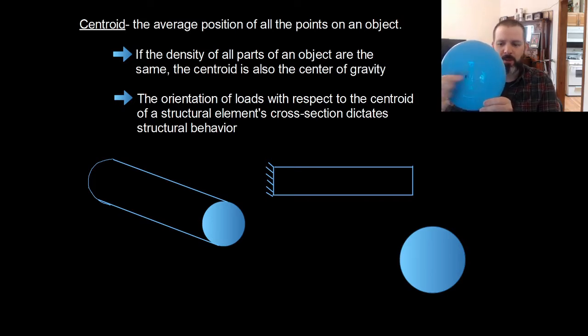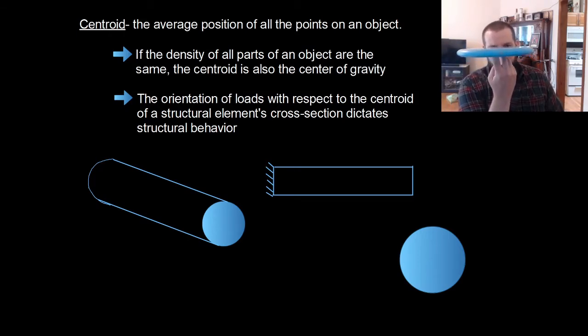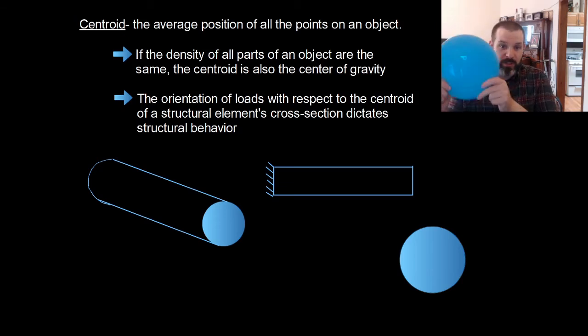Let's take for example my son's frisbee golf putter. It's made from one material, it's circular, and that puts the centroid dead in the middle. If I take this disc and put my finger in the middle of it, it will balance almost perfectly on my fingertip. The centroid is the average position of all the points in an object, and if you have one material like this disc, it is also the center of gravity.